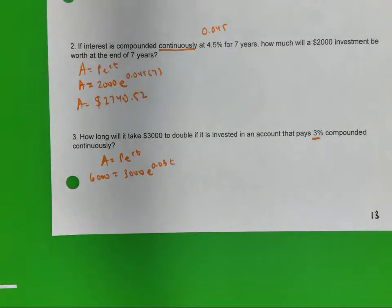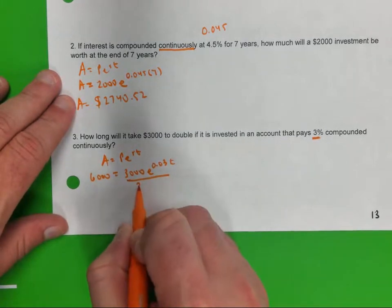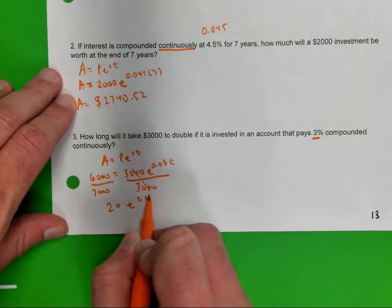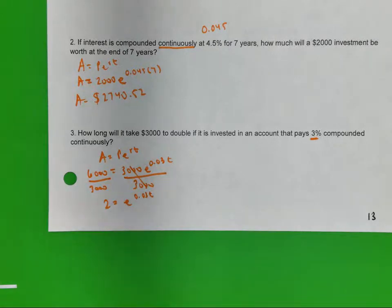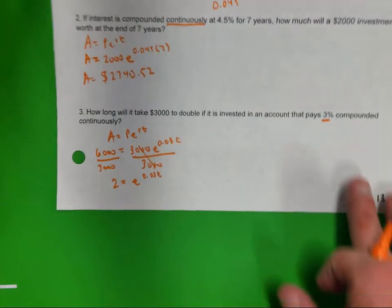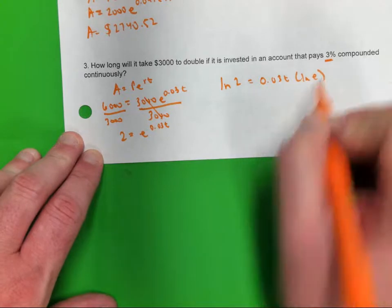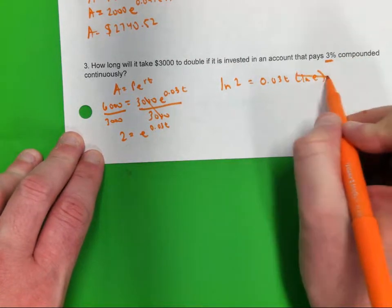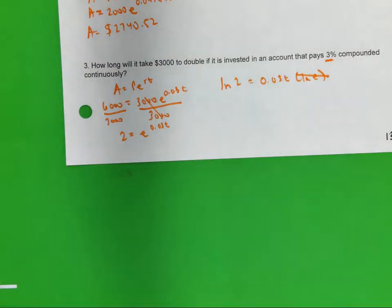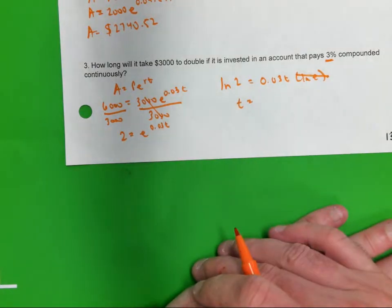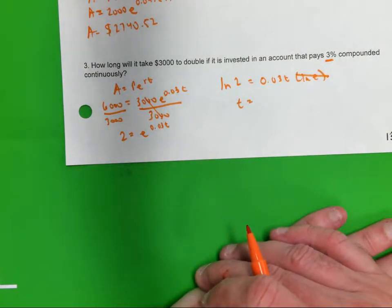So, I have an exponential equation. So, what would you do first to get the exponential part by itself? Divide by what? 3,000. I'm going to divide by 3,000. Same thing we've been solving. Can I get the bases to be the same? No, so I'm going to take the what of both sides? Natural log. Of both sides. We know natural log of E is what? So I'm going to find the natural log of 2 and divide it by what? 0.03.